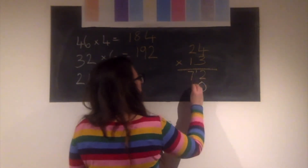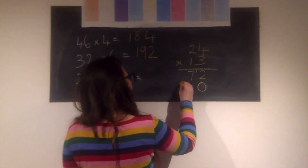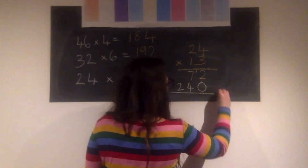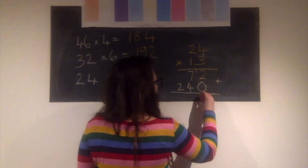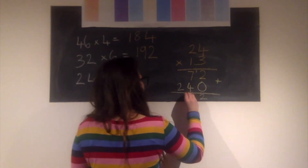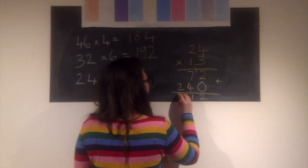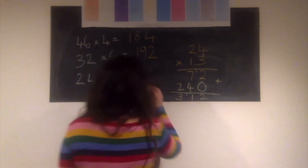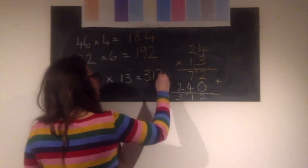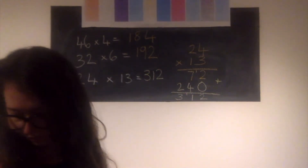Underneath we add our zero placeholder, because we're multiplying by a multiple of 10. Then 10 times 4 is 40, and 10 times 20 is 200. Add them together and the answer is 312.